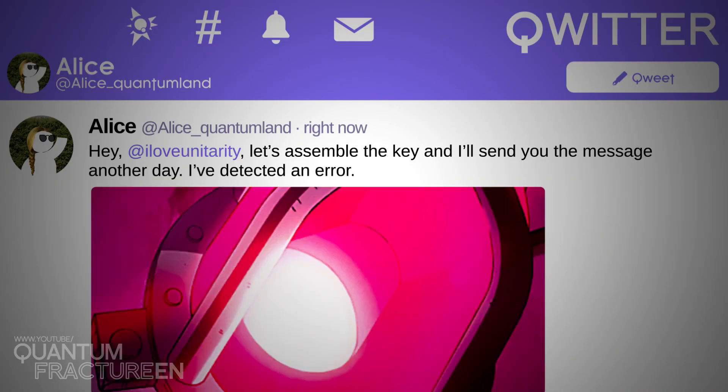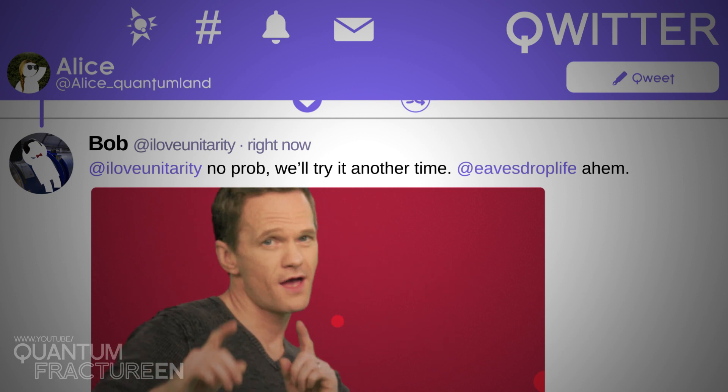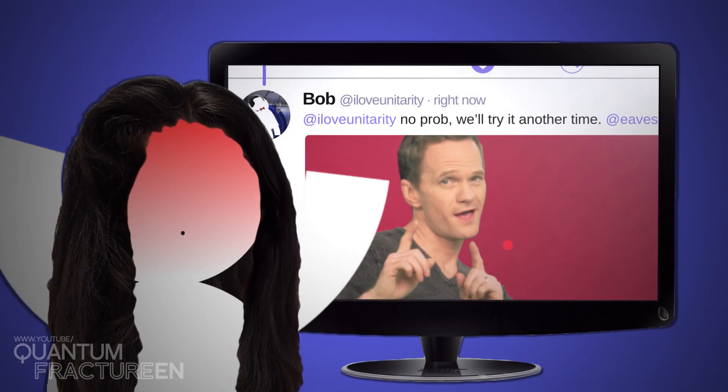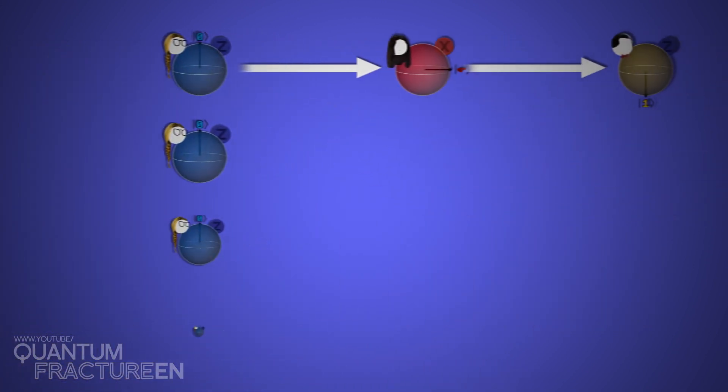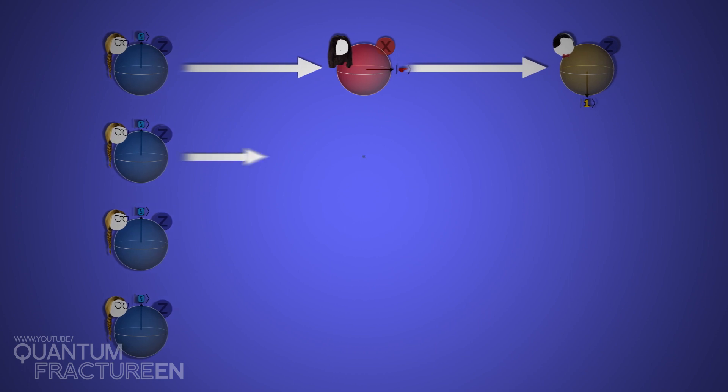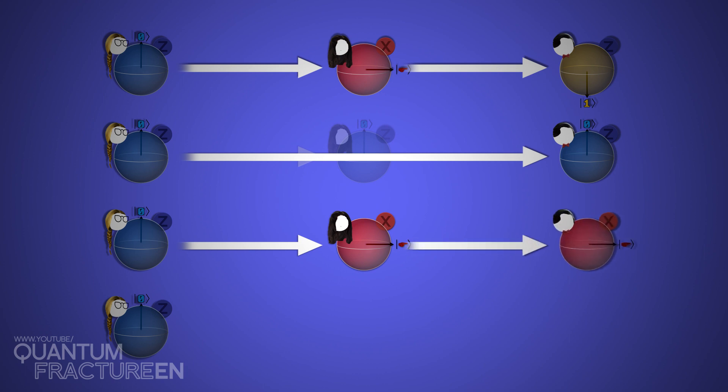As you've seen in this case, Alice busts Eve. But there will be other times when Eve's eavesdropping goes undetected. Look, maybe Eve's axis coincides with Alice's. Her measurement doesn't affect the qubit, and nobody would ever know she'd measured it. Or maybe her axis doesn't match Alice's, but Bob's doesn't either. Bob and Alice would strike that measurement and never pick up on Eve's interference. Even if her axis doesn't match Alice's and Bob's does, maybe Eve will get lucky, and Bob will recover the original state in his plotting. It would be like nothing had happened, and Eve would be safe.